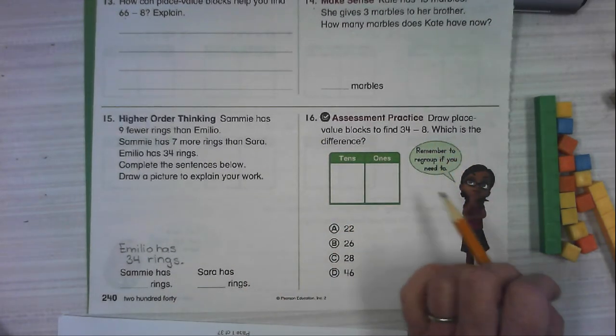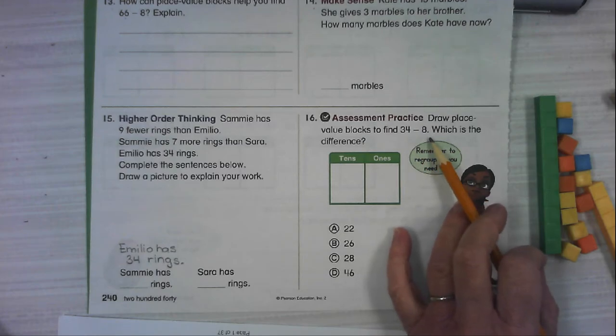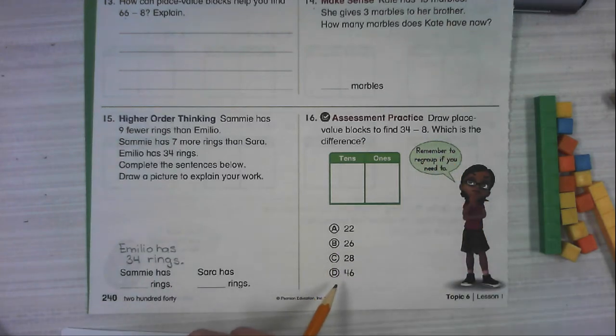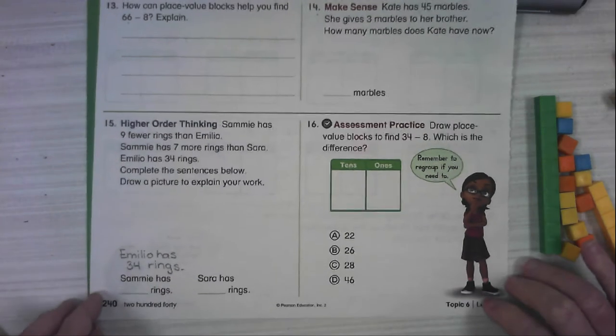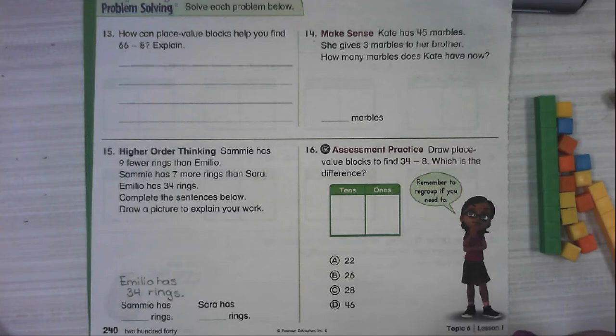And number 16. Draw the place value blocks to find 34 minus 8 and figure out which one is the difference. So she says remember to regroup if you need to. Alright, guys. We're starting a really exciting subtraction journey. I'm really happy to be on it with you. Good luck. And we'll see you next time. Bye.